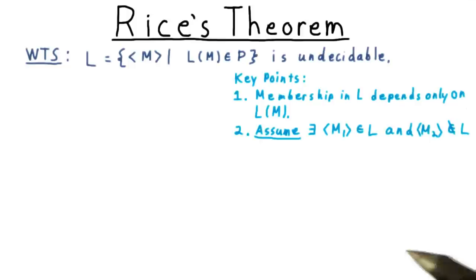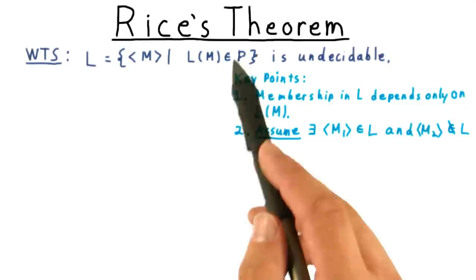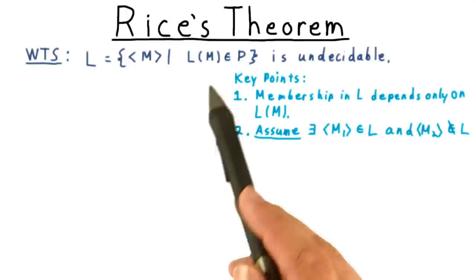Either the empty set is in P, and therefore every machine that doesn't accept anything is in the language L, or else the empty set is not in P.